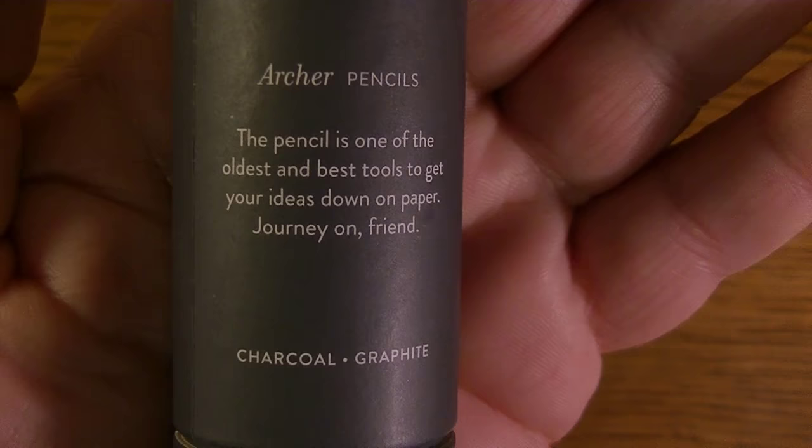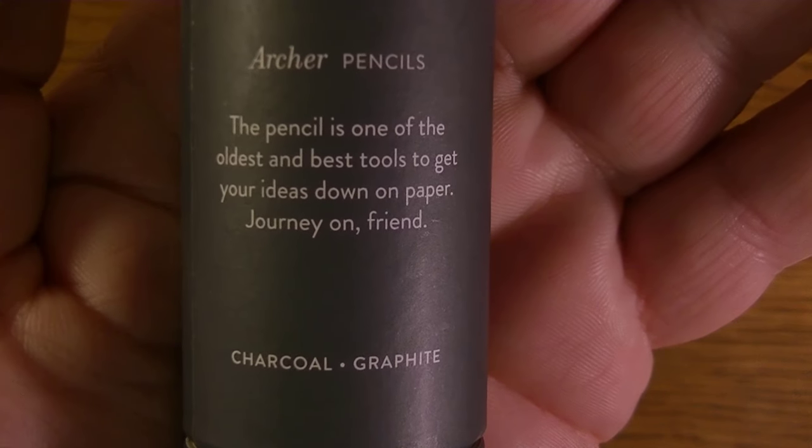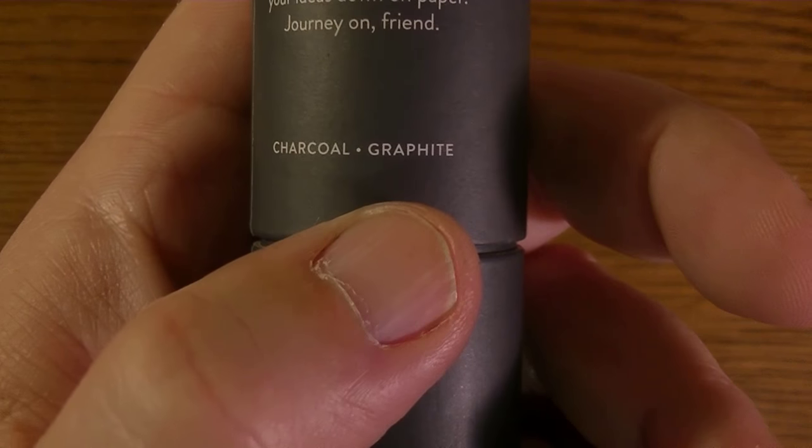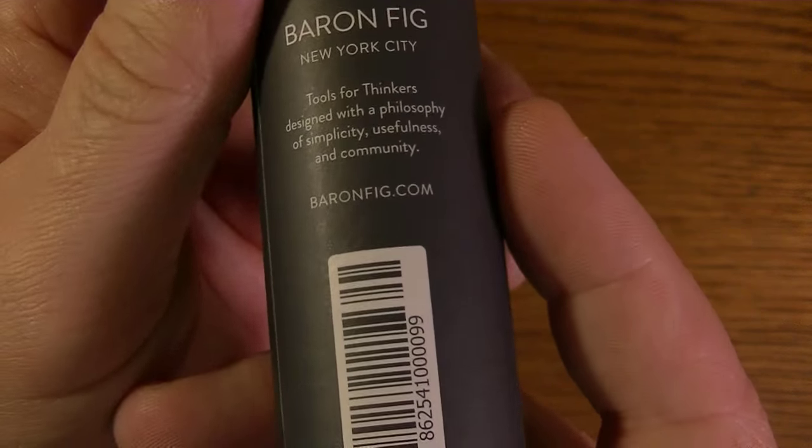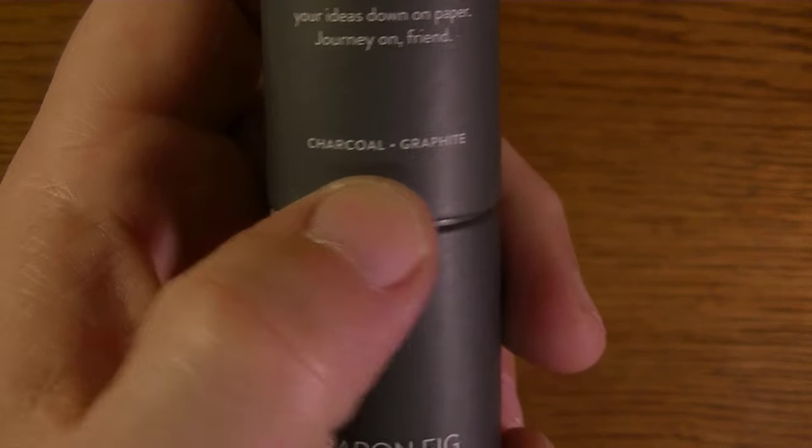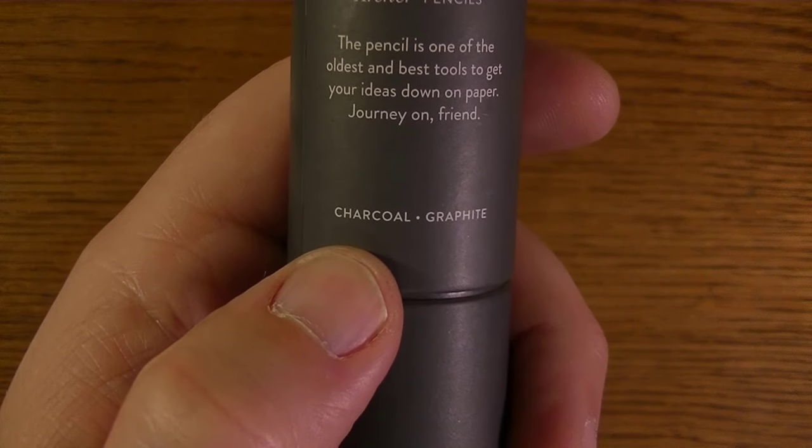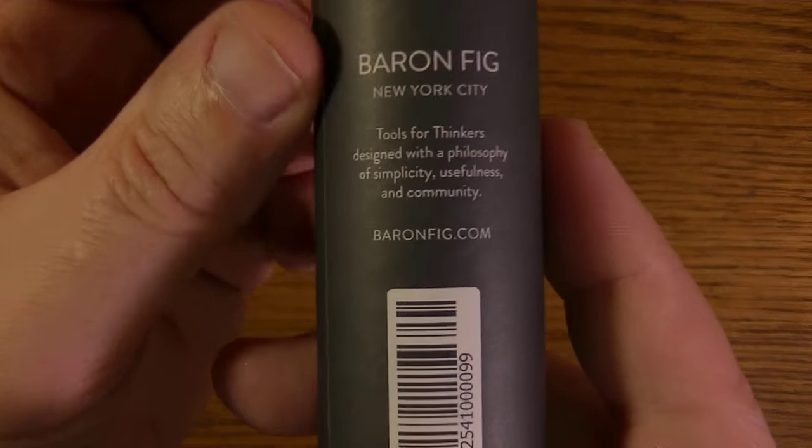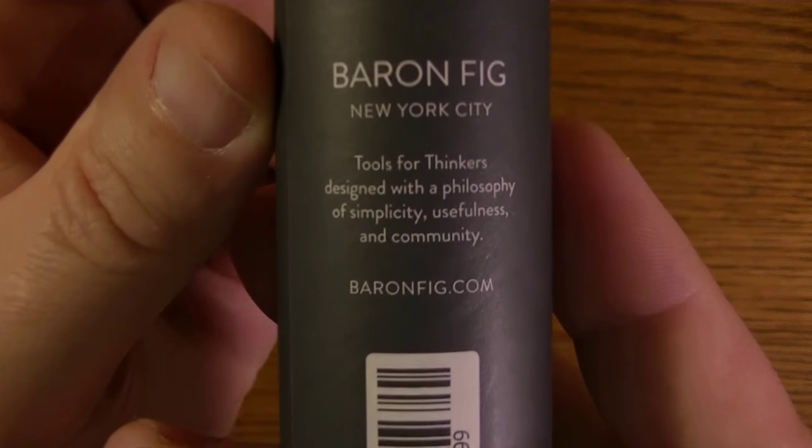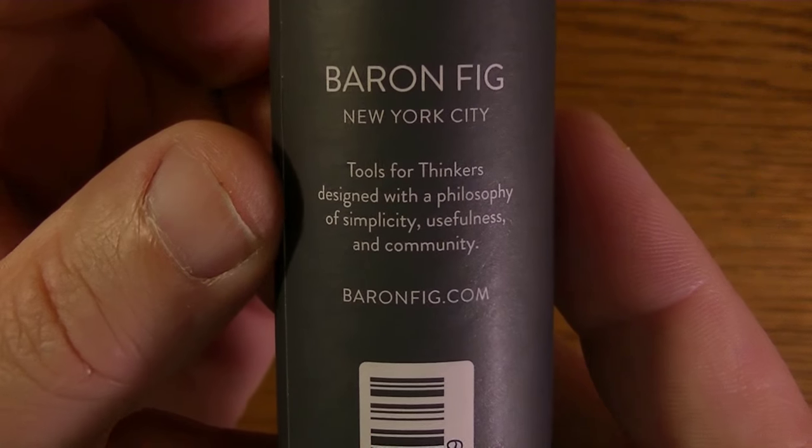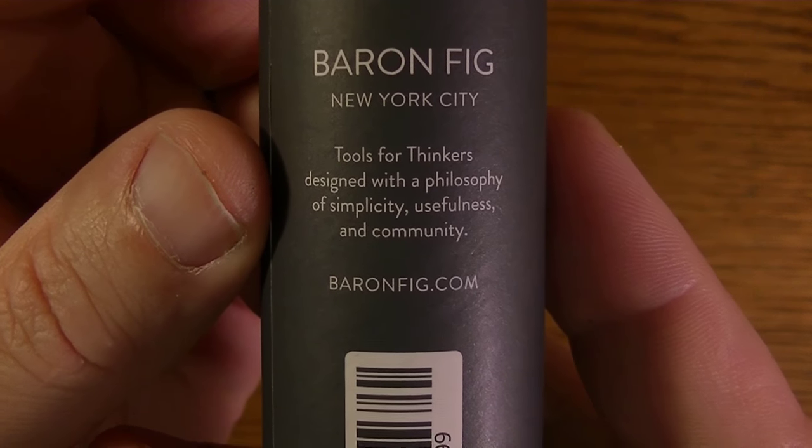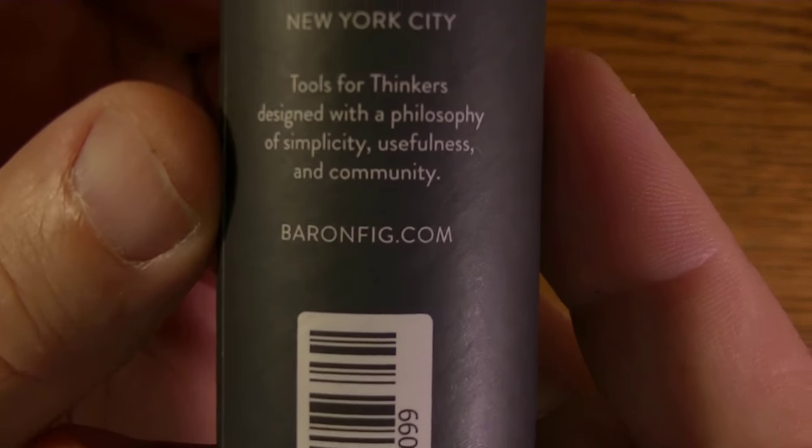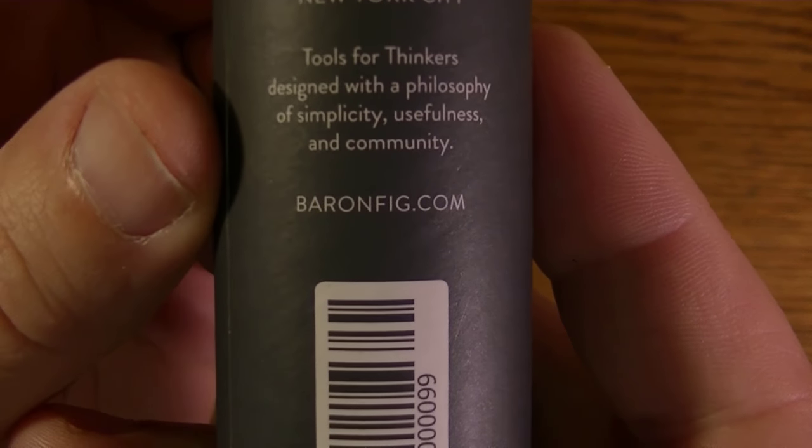It says the pencil is one of the oldest and best tools to get your ideas down on paper. Journey on, friend. And then this charcoal graphite. The charcoal part, I believe, is in reference to the color of the pencil, at least part of the pencil, not the whole pencil. And we'll look at that in a minute. And then there's some more here. Baron Fig New York City tools for thinkers designed with a philosophy of simplicity, usefulness and community.